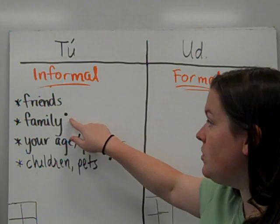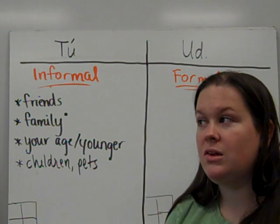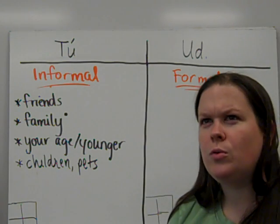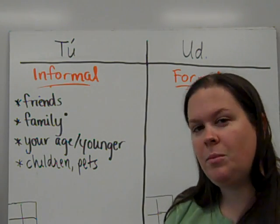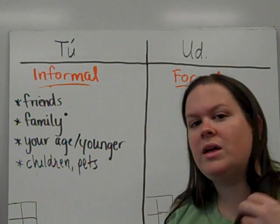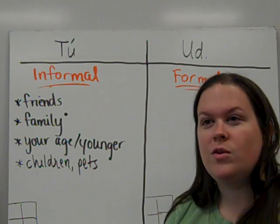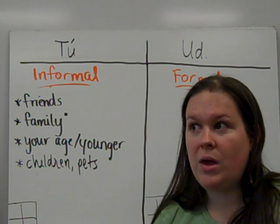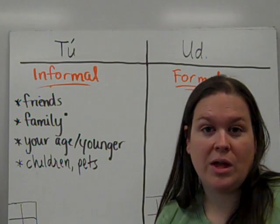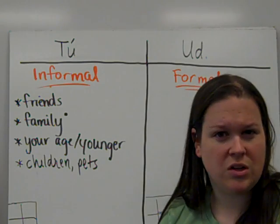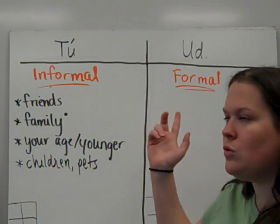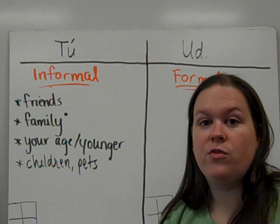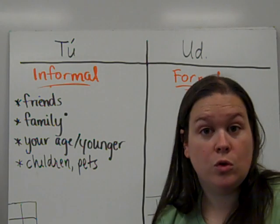I have a little dot by family because depending on who you're talking to, some people use tú and some people would use usted. If you would say sir or ma'am to your parents, grandparents, aunts and uncles, then you can use usted there. But most people for family just use tú.